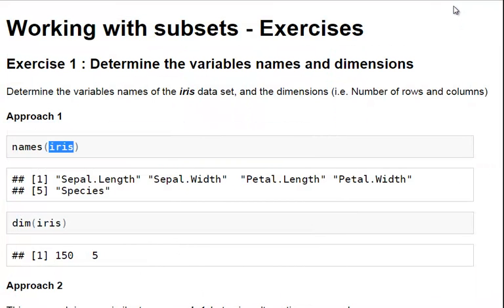So, the names of the variables, we have five columns. Sepal.Length, Sepal.Width, Petal.Length, Petal.Width, and Species. So, there are five columns and you have five variables and each of the variables has a name and those are the variables there, Sepal.Length, Sepal.Width, and so on.